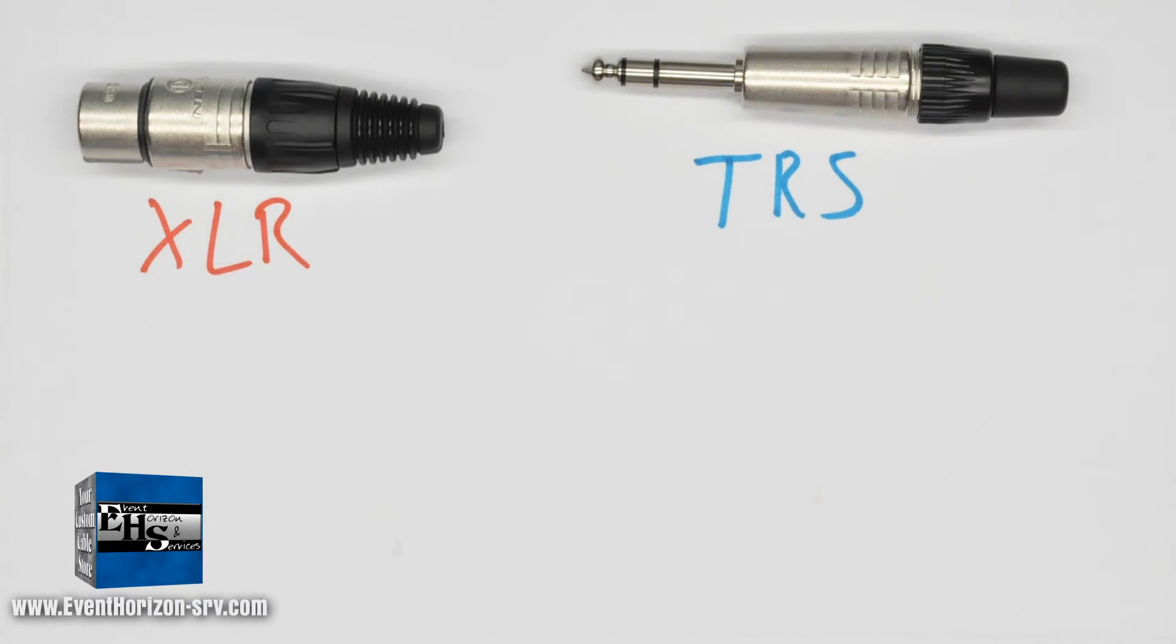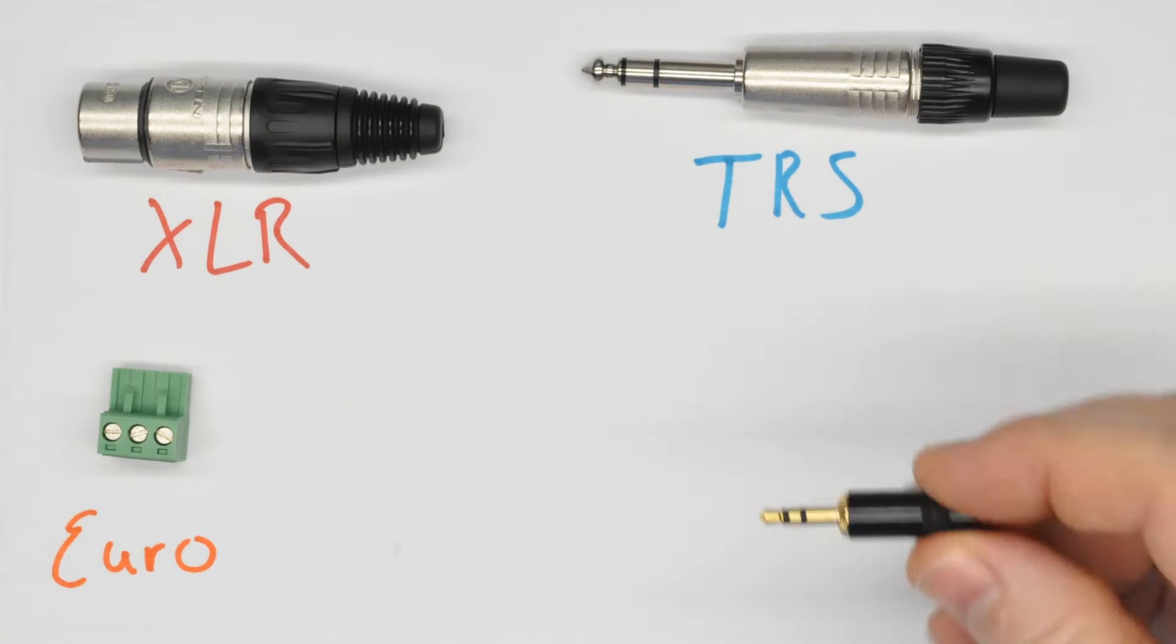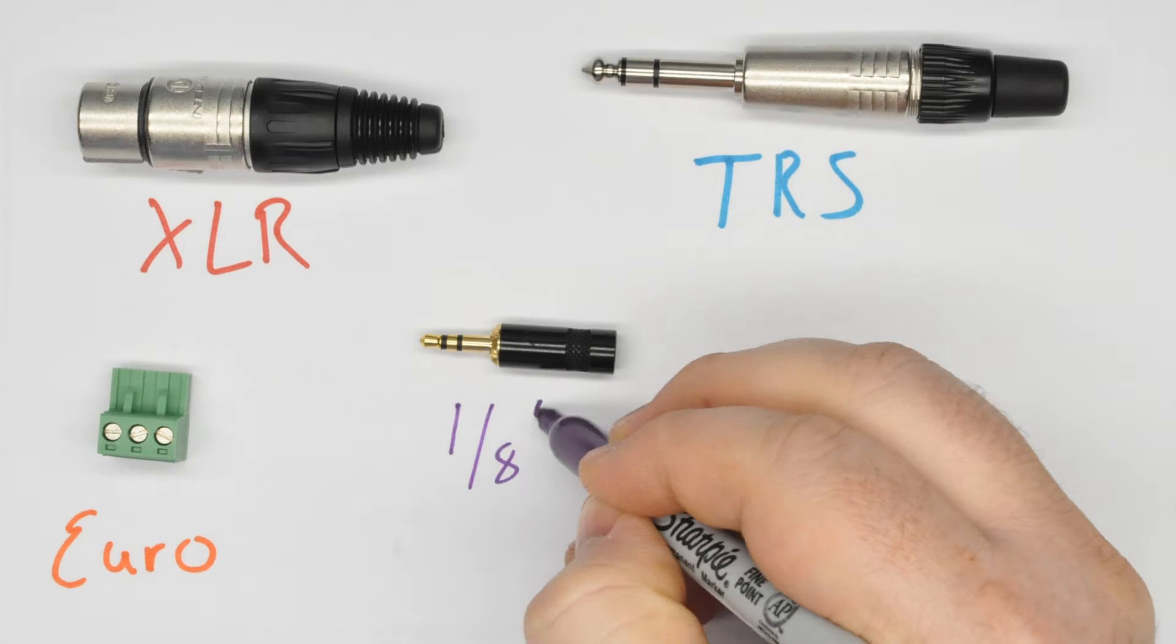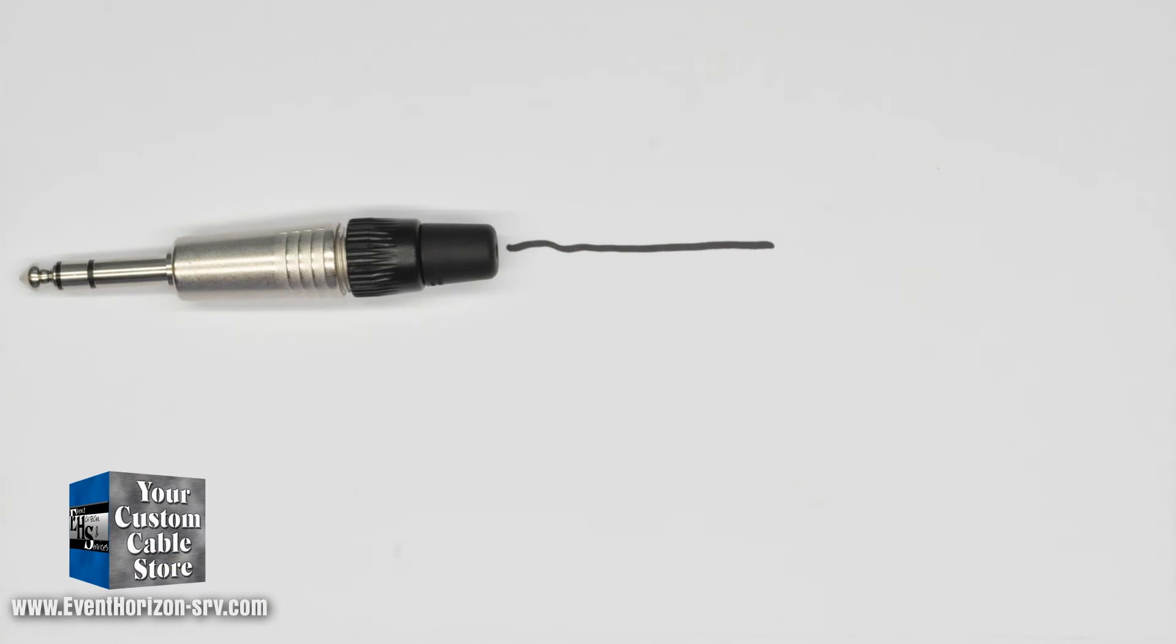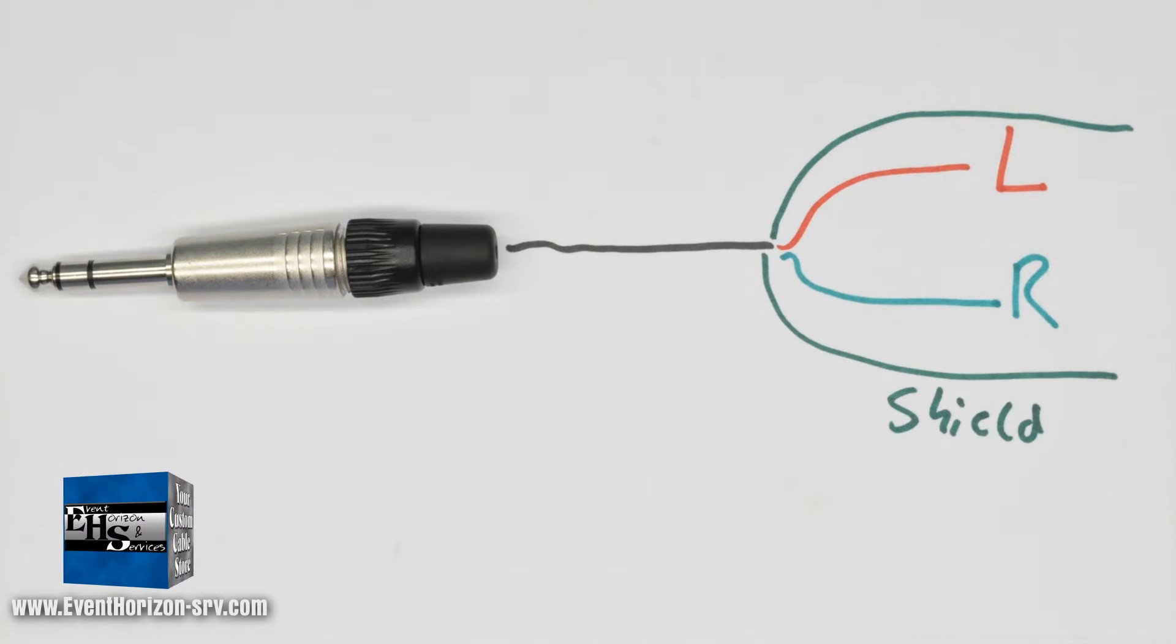Less commonly, you will find it terminated with Euro connectors, TRS eighth inch connectors, and TA3 mini XLR connectors. It can also be used to carry a stereo signal with one wire being the left and the other wire being the right and the shield being the common.